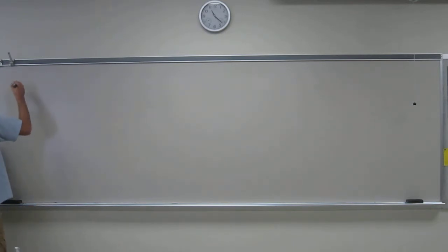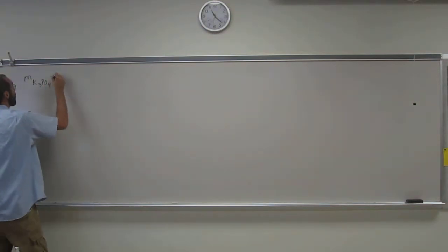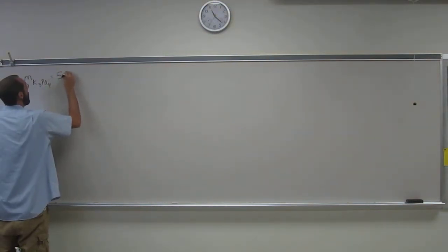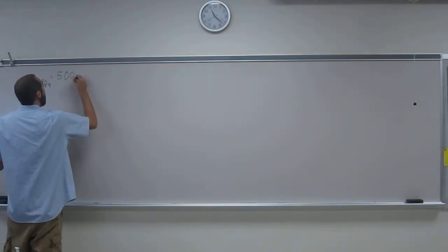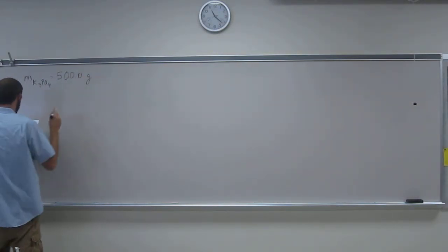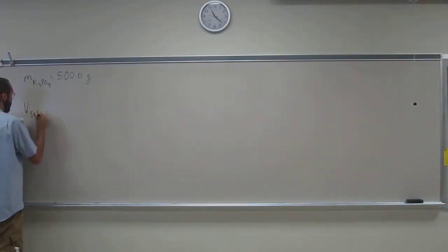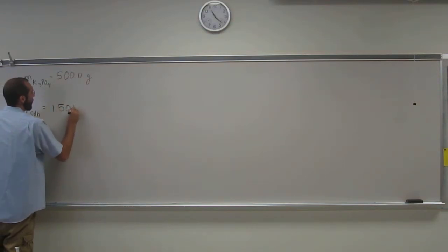Okay, so it tells us the mass of potassium phosphate, 500.0 grams, and it tells us the volume of the solution. It is 1.50 liters.